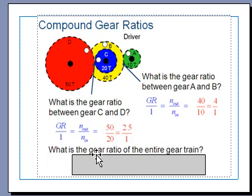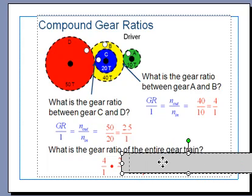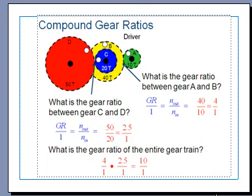And then what is the gear ratio of the entire gear train? How do we calculate that? Well, we take the gear ratio of the first set of equations that we have, 4 to 1, and we multiply it times the gear ratio of the second equation. So 4 times 2.5 is 10, 10 to 1.